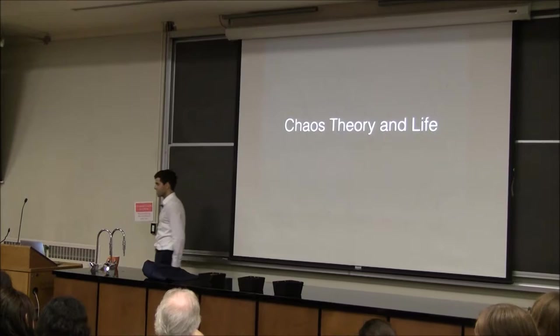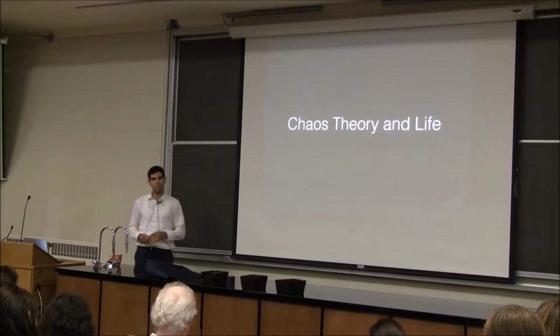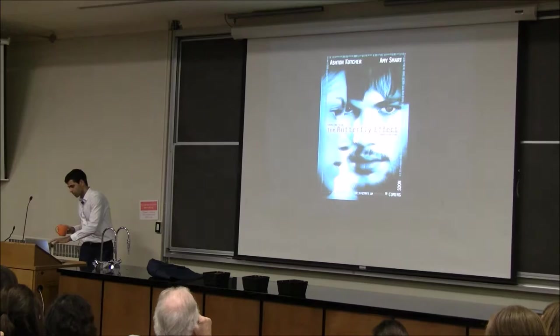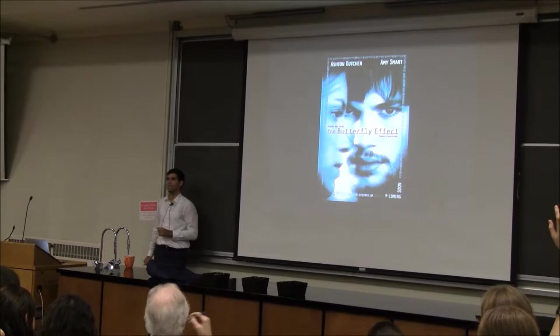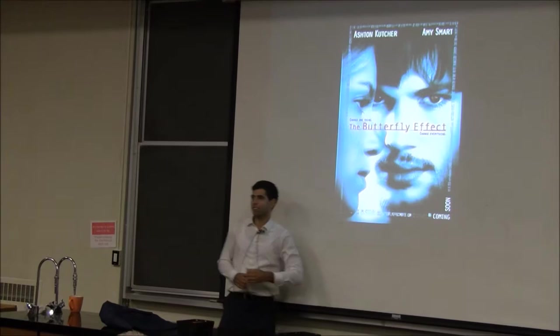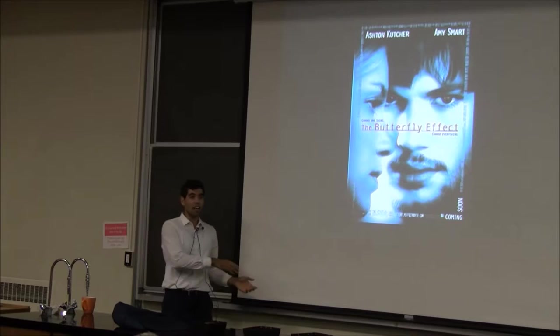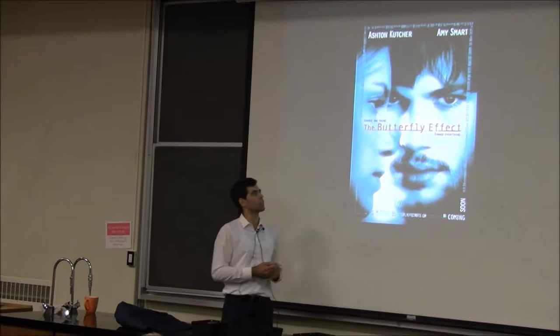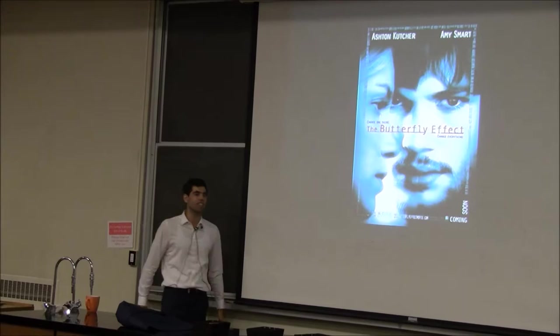I want to get into chaos theory and life — how chaos affects our lives. The butterfly effect. For those who haven't seen the film: it's based on chaos theory. Ashton Kutcher is trying to end up with Amy Smart, and he has the ability to write in his diary, go back in time, change one little thing about his past, and jump back to the future to see how things changed. No matter how hard he tries, there are always unintended consequences and he can never quite end up with the girl of his dreams.